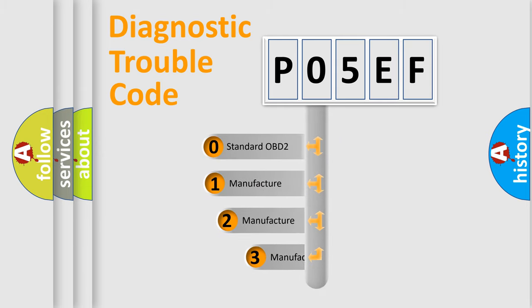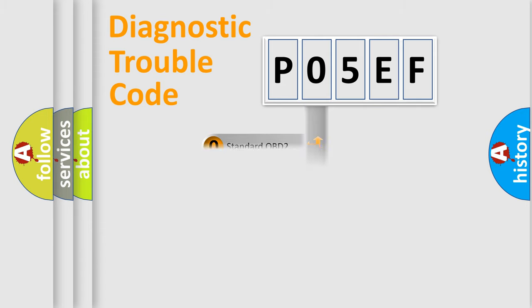If the second character is expressed as zero, it is a standardized error. In the case of numbers 1, 2, 3, it is a manufacturer-specific expression of the car error.